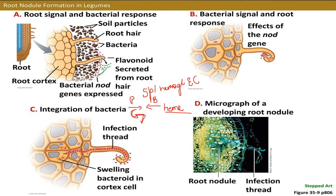The bacteria receive a protected home, and the legume plant provides shelter to the bacteria in exchange for plant carbon. Multiple biochemical changes occur: nitrogenase is blocked by oxygen, and plant and bacterial cells produce the leghemoglobin binding complex to block oxygen. There are also control mechanisms further down the line.